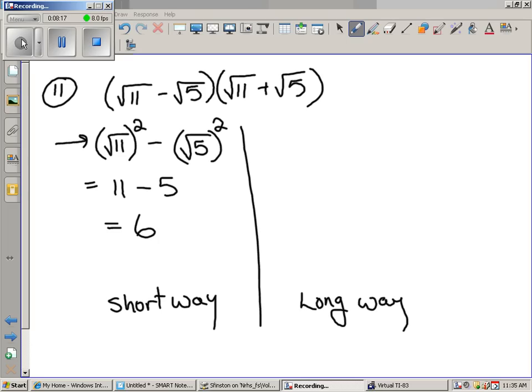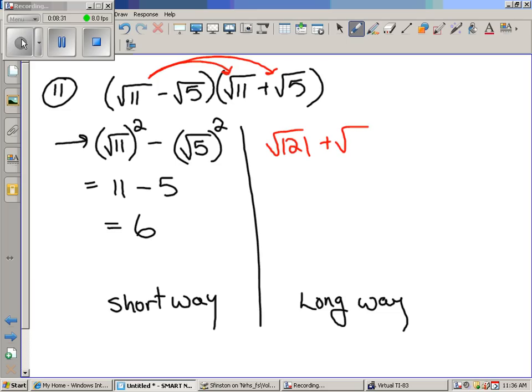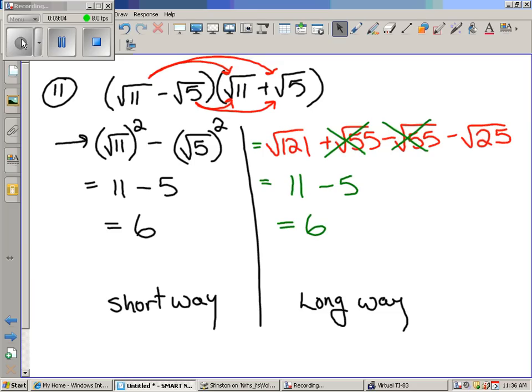Okay, still a lot of people having trouble with the shortcut. So we're going to do it out the long way. We just foil. And this works every single time. Square root of 11 times square root of 11 is square root of 121. Square root of 11 times positive square root of 5 is positive square root of 55 because you multiply the numbers underneath. Same deal over here. And finally, negative square root of 5 times positive square root of 5 is negative square root of 25. These two reduce, these two cancel off. The square root of 121 is 11. The square root of 25 is 5. And we get the same answer. Just a little bit longer.